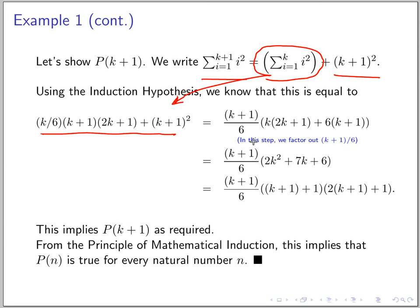In the end you get something in this form, so we know that this term equals this term, and this is P(k+1) - this is what we want to prove. Because of the base case and the inductive step, the principle of mathematical induction implies that P(n) is true for every natural number n. This is the example of the inductive proof that we did last time.